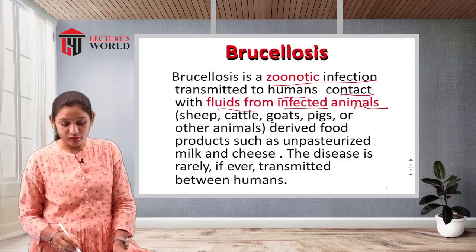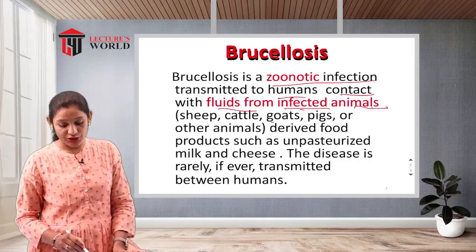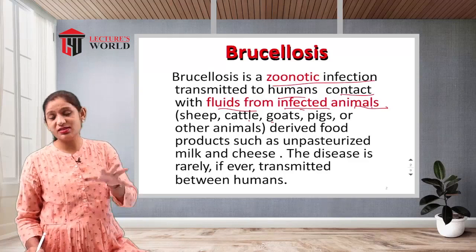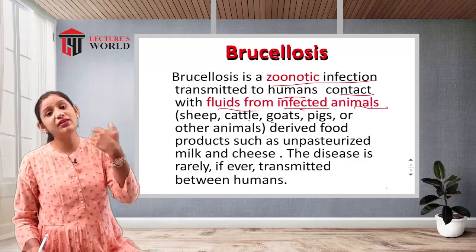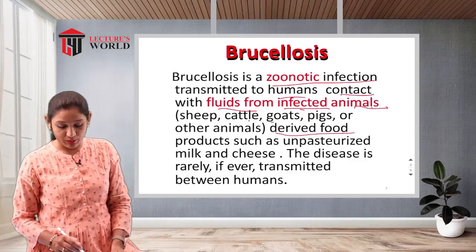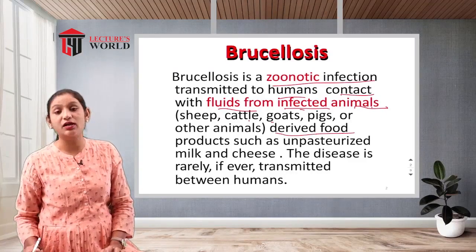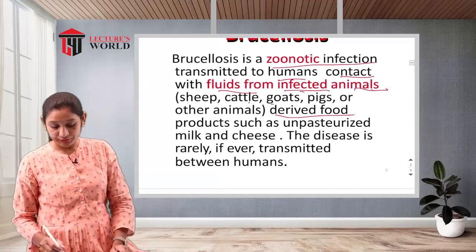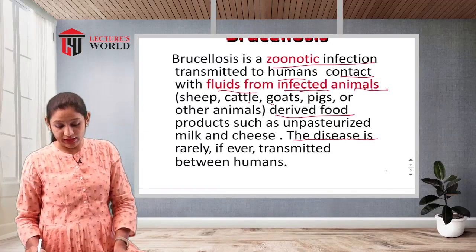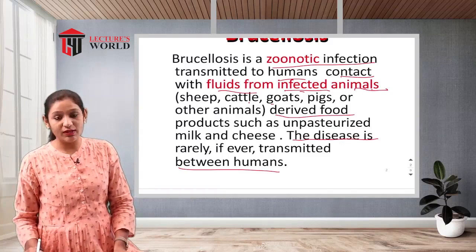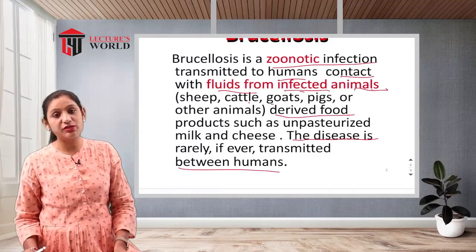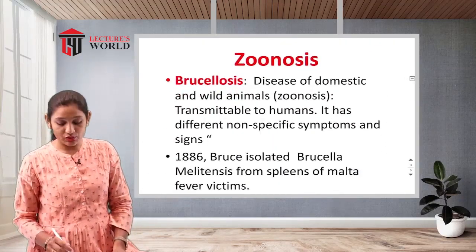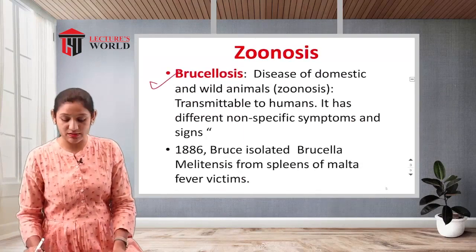Humans are affected through contact with fluids from infected animals like sheep, cattle, goats, pigs, or other animals infected with Brucellosis. It is also transmitted through derived food products such as unpasteurized milk and cheese. The disease is rarely, if ever, transmitted between humans.